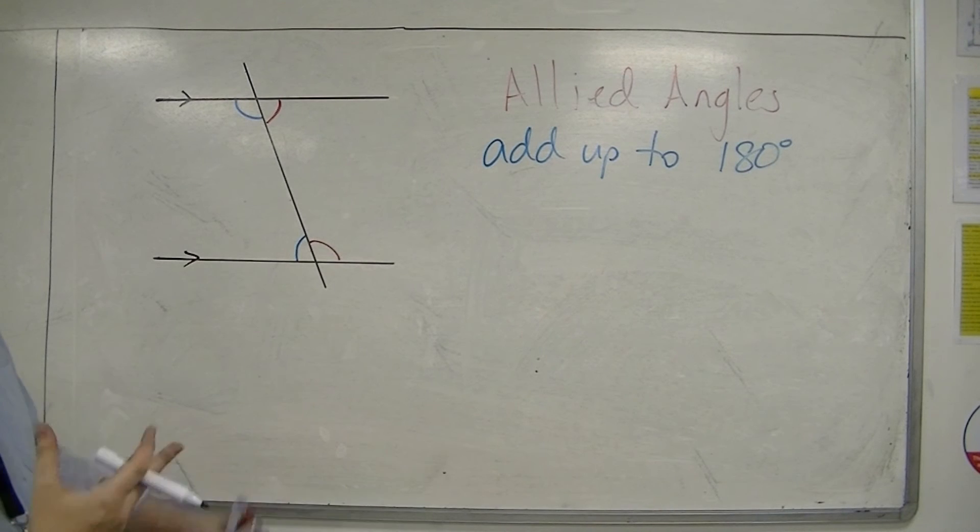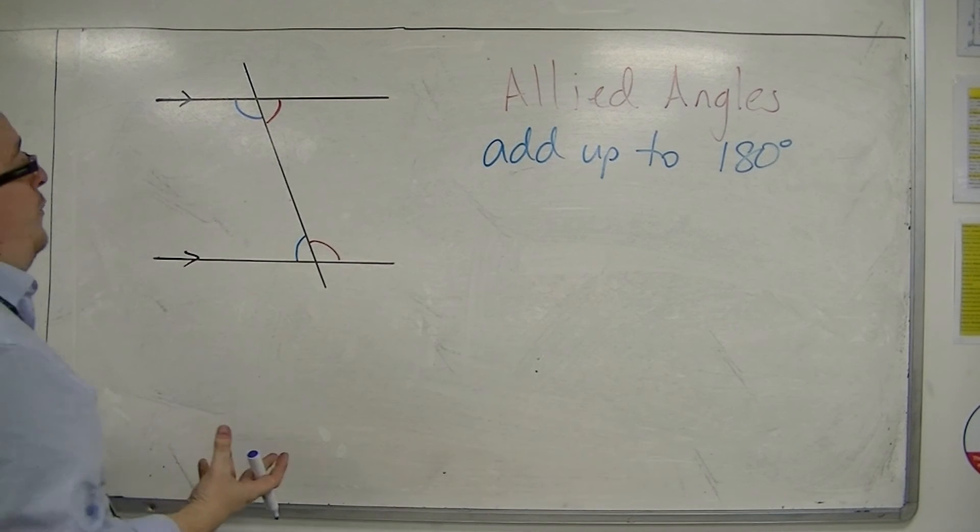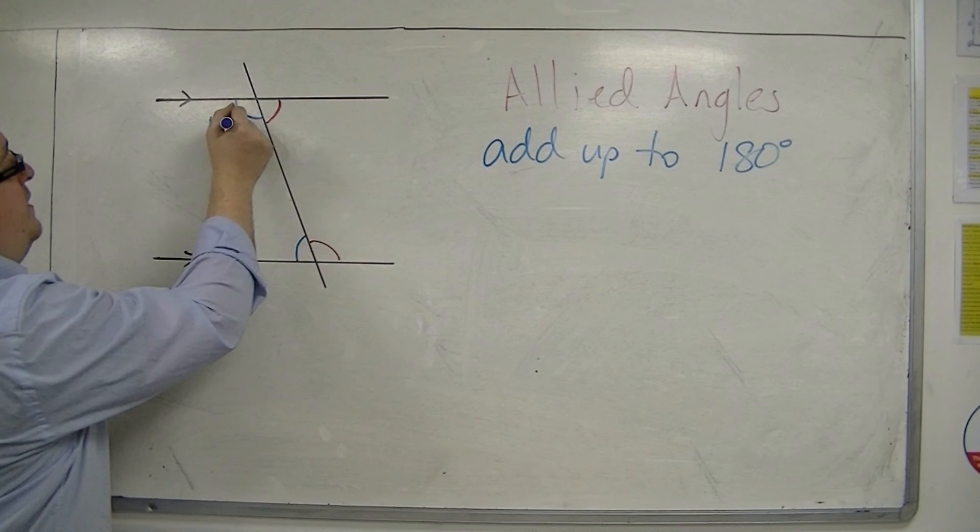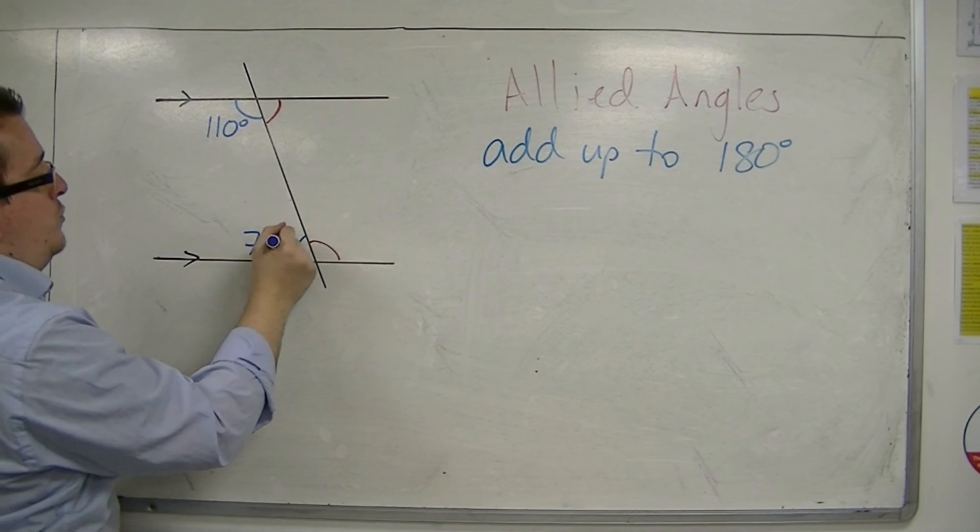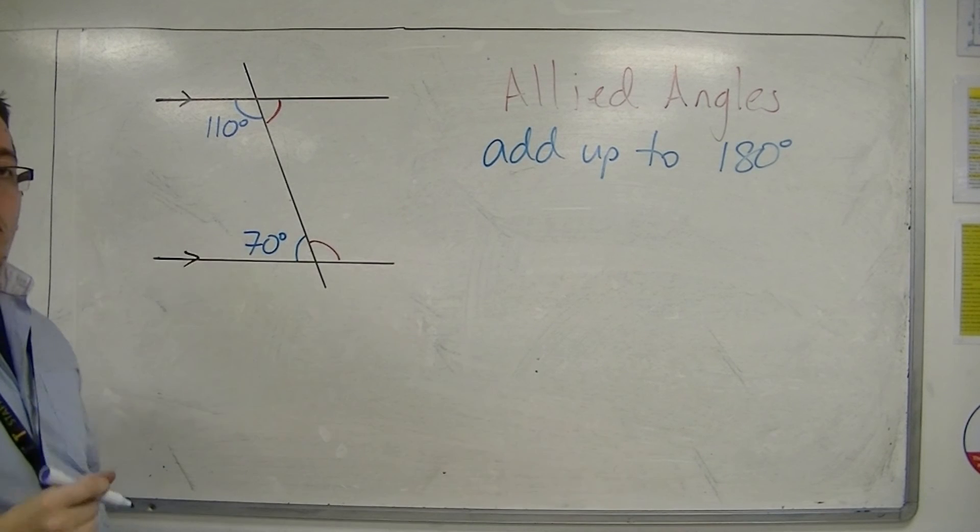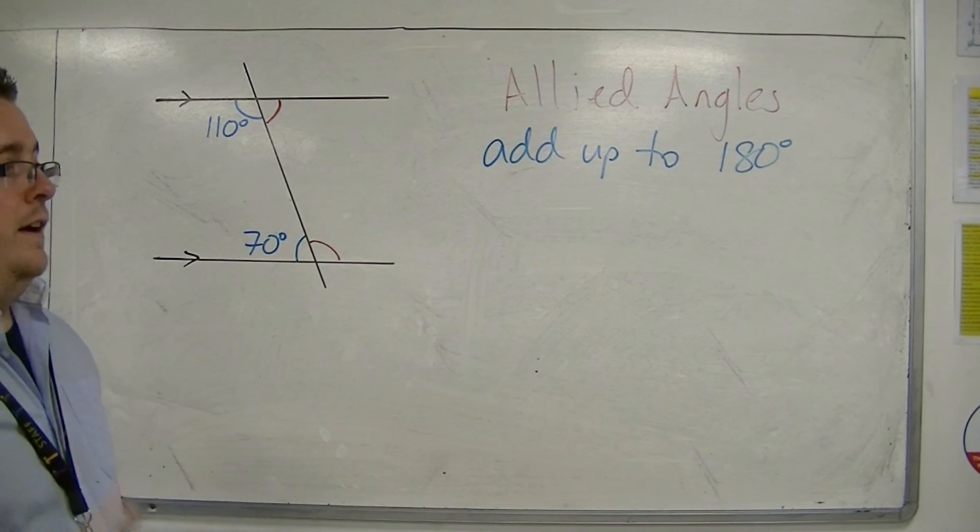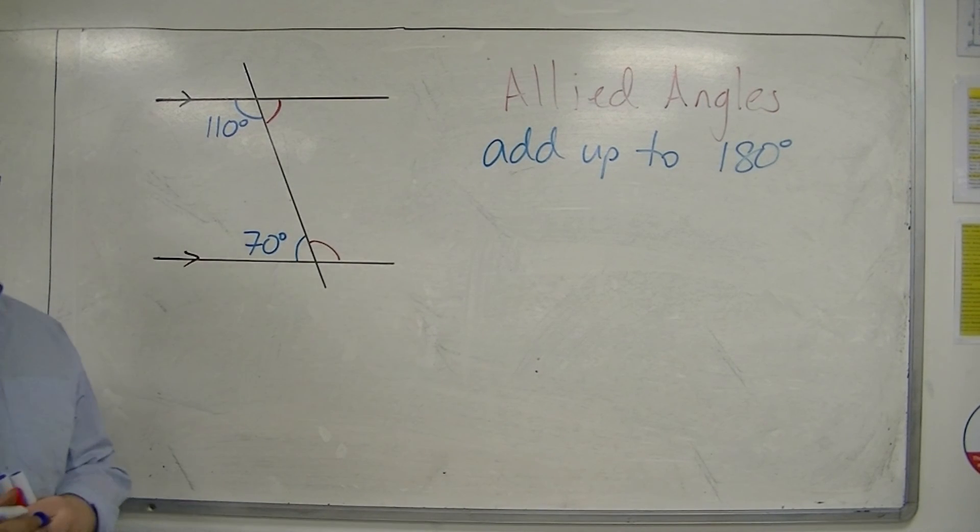So that is their property, and it's very useful, because if I knew that this angle was 110 degrees, then I can very quickly say that that angle is 70 degrees, because they must add up to 180. And I can use that property to master these types of problems.